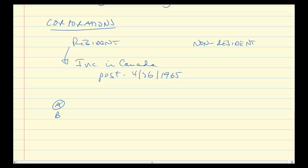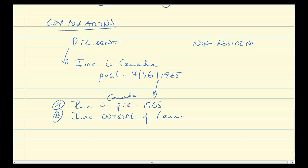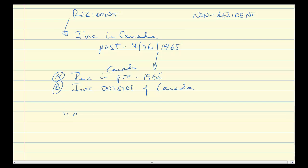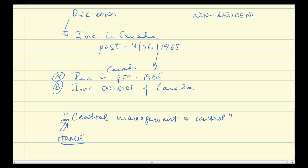That leaves two categories of companies to think about: ones incorporated in Canada pre-1965, and anyone incorporated outside of Canada ever. So if you weren't incorporated in Canada, is it still possible to be considered a resident of Canada? It is. The continuing-state-of-relationship principle is the same, but what we're looking for here is where your central management and control are located. Where that is, that's the corporation's home. But this becomes difficult — it's not so easy to figure out whether you're there or not.